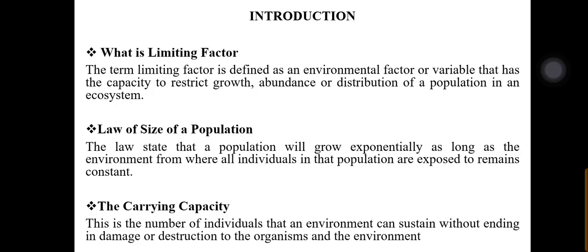The limiting factor can be visualized using a pyramid of organisms going up from producer to consumer. The factors limiting the bottom level — the producers, which are the plants — will not be the same as those limiting the primary consumers, which are the herbivores. For plants, limiting factors include water, sunlight, and carbon dioxide, which they need for photosynthesis. A factor not limiting under one set of conditions may yet be limiting under another.